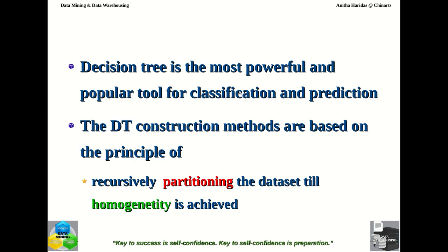The decision tree is the most powerful and popular tool for classification and prediction. Decision tree construction methods are based on the principle of recursively partitioning the data set until homogeneity is achieved. This is the basic principle used for constructing the decision tree. The given training data set will be partitioned until homogeneity is achieved.